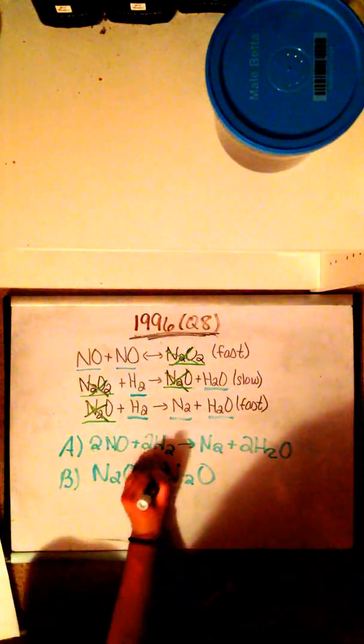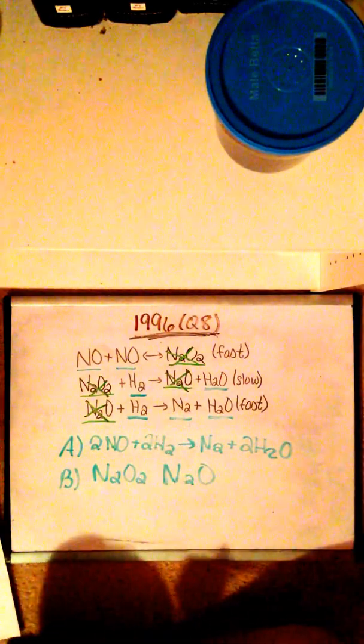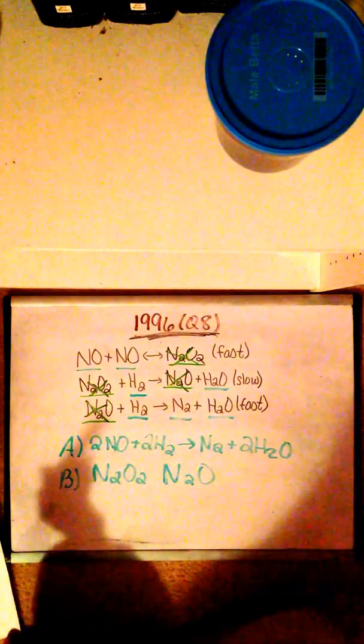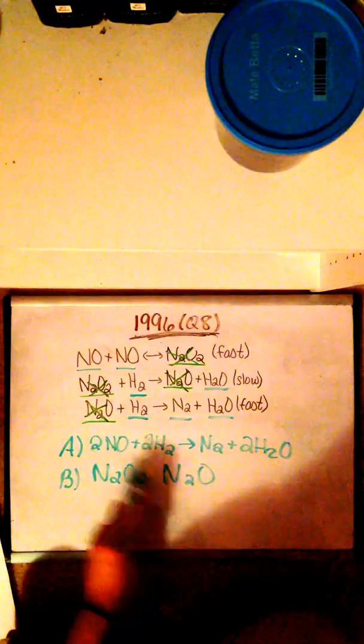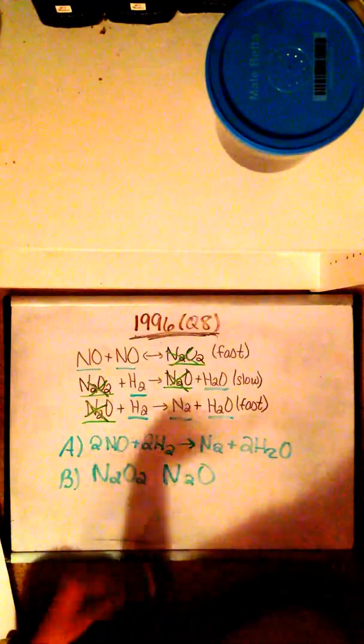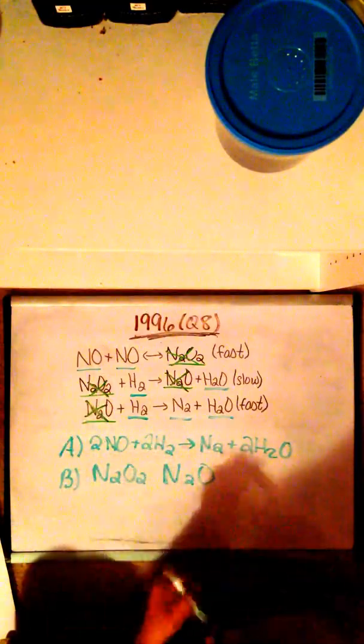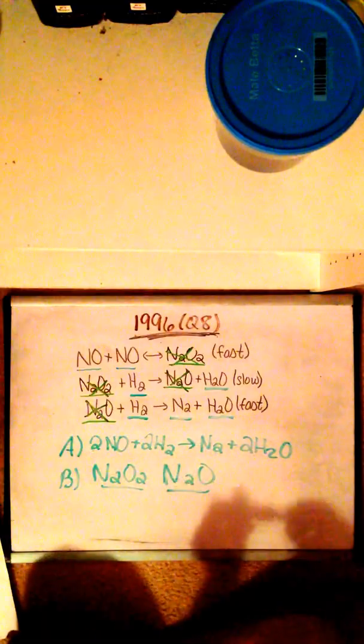Now, another way to triple check that these are our intermediates is looking back at the balanced equation we made in part A. As you can see, neither of these molecules are present in this equation, which proves that these are our two intermediates for this specific reaction.